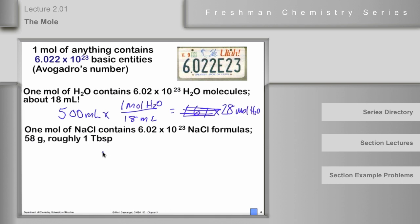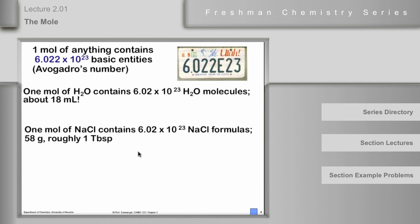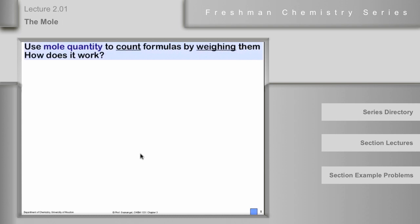The reason we need to learn how to use moles is that when we want to carry out a chemical reaction, we have to think on the atomic scale. In essence, what we do is use the mole quantity to count formulas, since we can't see them. We need to count formulas by weighing them.